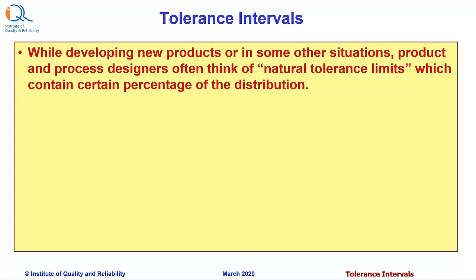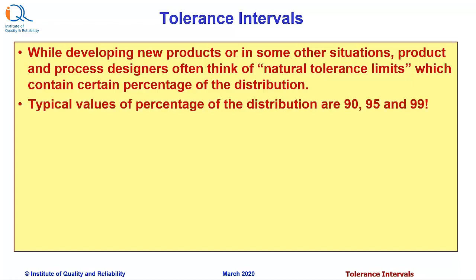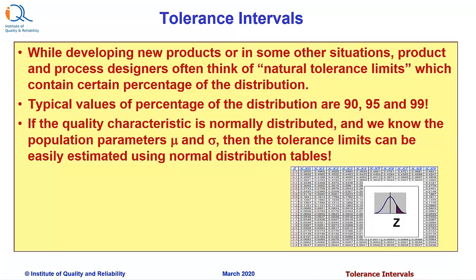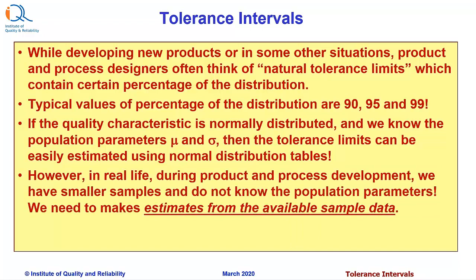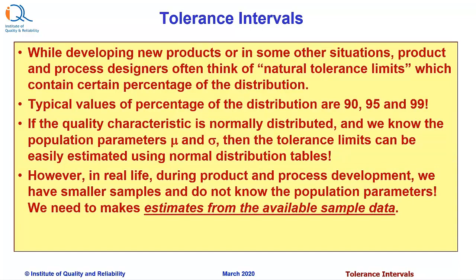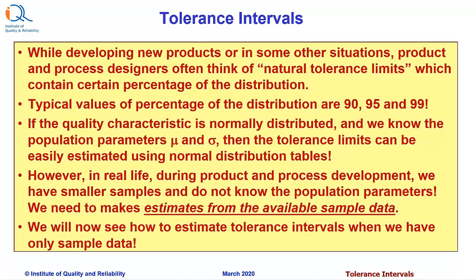While developing new products or in some other situations, product and process designers often think of natural tolerance limits, which contain a certain percentage of the distribution. Typical values are 90%, 95%, or 99%. If the quality characteristic is normally distributed and we know the population parameters mu and sigma, then the tolerance limits can be easily estimated using normal distribution tables or Microsoft Excel. However, in real life during product and process development, we have smaller samples and do not know the population parameters. We need to make estimates from the available sample data.